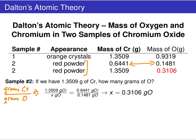So we plug in 1.35 for the unknown's chromium value — we don't know the grams of oxygen yet — but we know that ratio must equal the ratio from our first sample, where we have both values. We can solve for x.